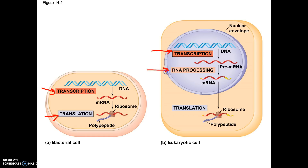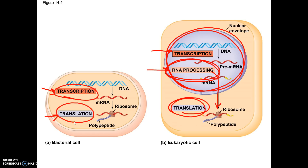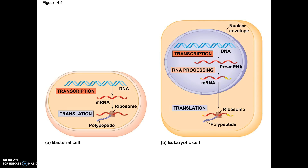In eukaryotes, transcription occurs in the nucleus, and then the RNA gets processed before it ever leaves and goes to the ribosomes for translation. Whereas in a prokaryote, both transcription and translation happen in the cytoplasm because there is no nucleus, and the RNA processing step doesn't happen. So that's a little overview.